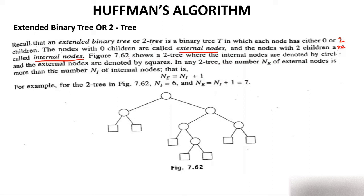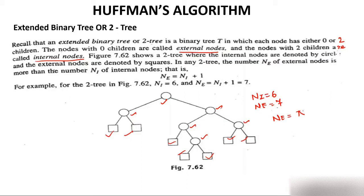Counting the nodes in the example: there are 6 internal nodes and 7 external nodes. This proves that the number of external nodes is equal to the number of internal nodes plus 1. You can make any extended binary tree and you will always get this result: external nodes = internal nodes + 1.